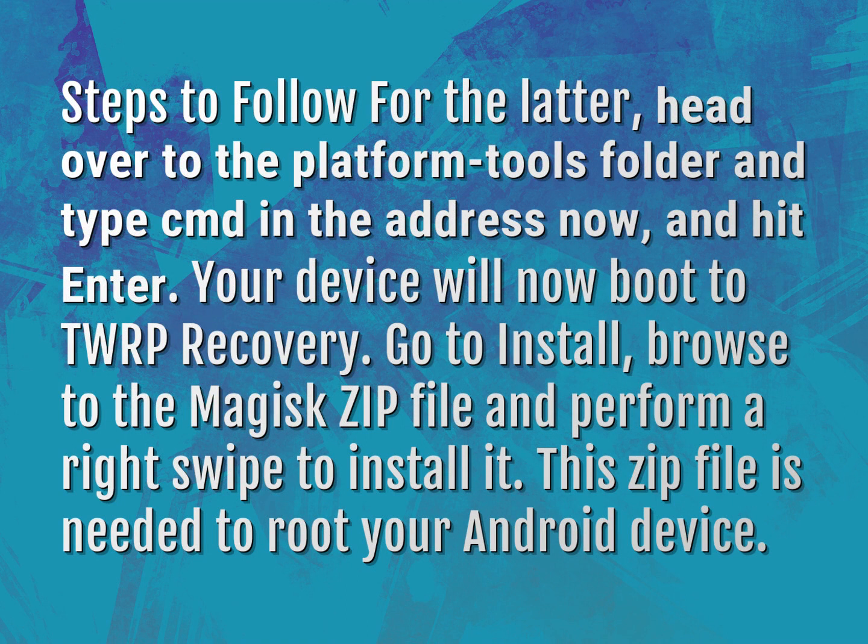Your device will now boot to TWRP Recovery. Go to Install, browse to the Magisk zip file and perform a right swipe to install it. This zip file is needed to root your Android device.